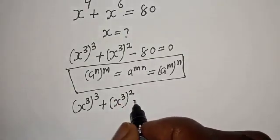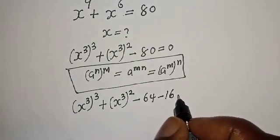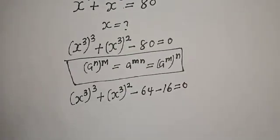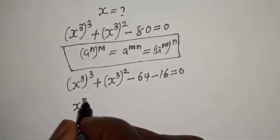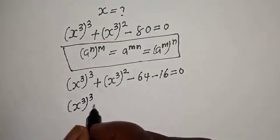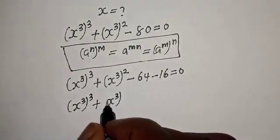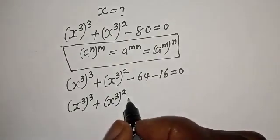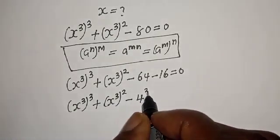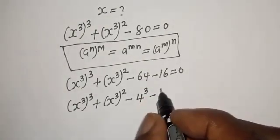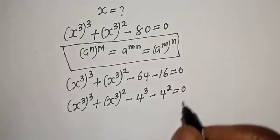This can be rewritten by splitting minus 80 as minus 64 minus 16, giving s raised to power 3, to the power of 3, plus s raised to power 3 squared minus 64, where 64 is 4 raised to power 3, minus 16, where 16 is 4 squared, is equal to zero.